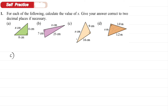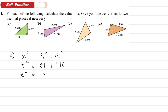Looking at C: the hypotenuse is not given; we need to find it, so X is the hypotenuse. X squared equals 9 squared plus 14 squared, which gives 81 plus 196, so X squared equals 277. Taking the square root: X equals √277. The answer is not a whole number, so we give it to 2 decimal places: X equals 16.64 cm.